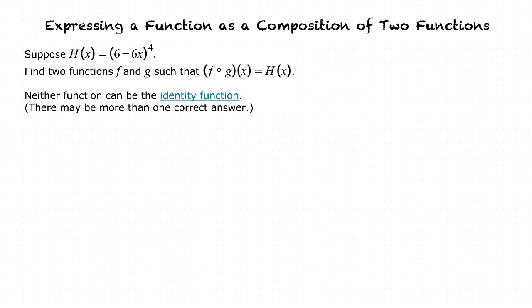This also means that there are several different possible options for g of x and f of x. Let's find a couple of them. Because we have a quantity to the fourth power, we could let the outer function f be x to the power of 4. This would mean that g of x is 6 minus 6x.